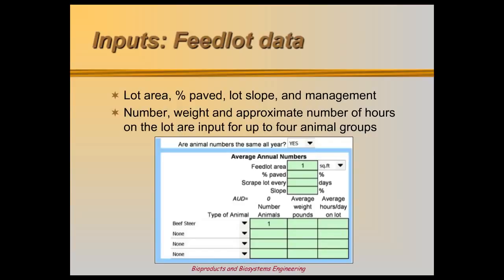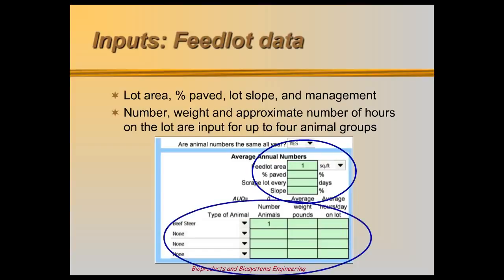MinFarm requires specific information for each lot: the size, slope, percentage of paved area, and cleaning frequency all play a role in runoff potential. A concrete lot that's cleaned often may not be as likely to pollute, and the same goes for feedlots that are mostly flat. Drop-down menus allow selection of up to four different animal types. Their average weight and time spent on the lot is typed in by the user, helping calculate how much manure ends up on the feedlot. Don't forget to consider lot population throughout the year — if it changes, be sure to select no and fill in the corresponding data by season.